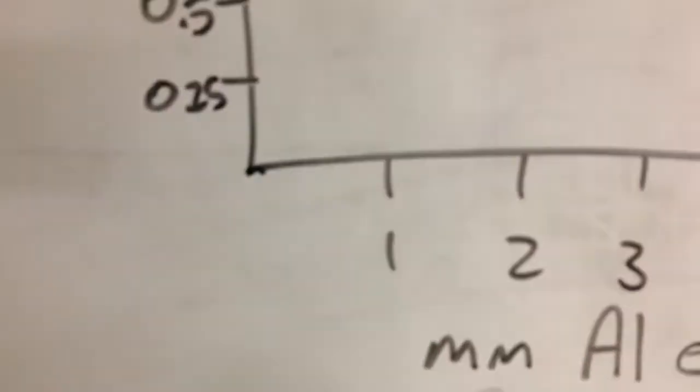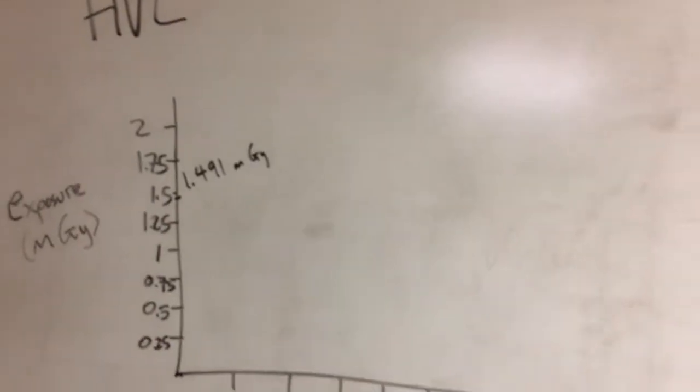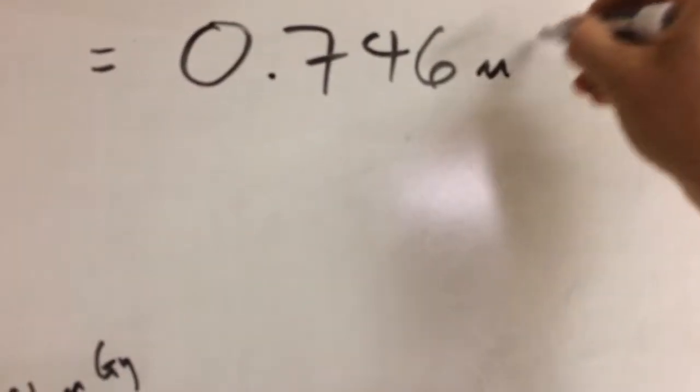1.491 milligray. So with that initial exposure, no filtration, we have 1.491 milligray. But what we're interested in is actually half that amount, because we are interested in a half-value layer. So 1.491 divided by 2. Our half-value layer is going to result in an intensity of 0.746 milligray.